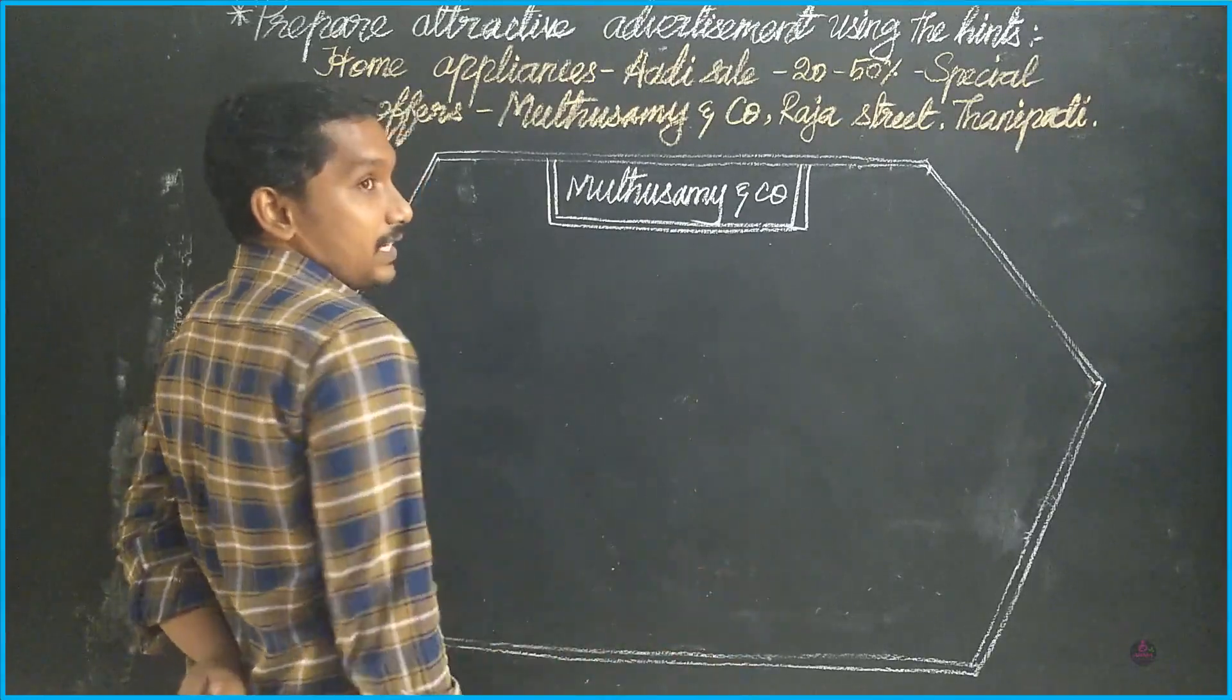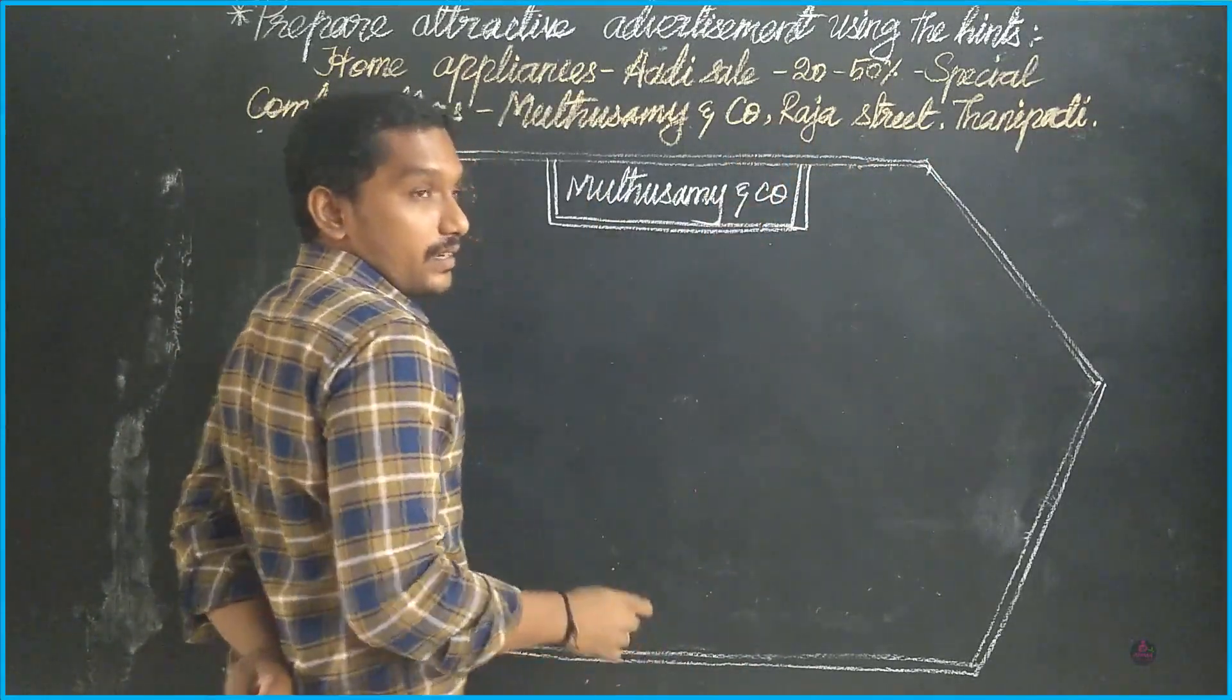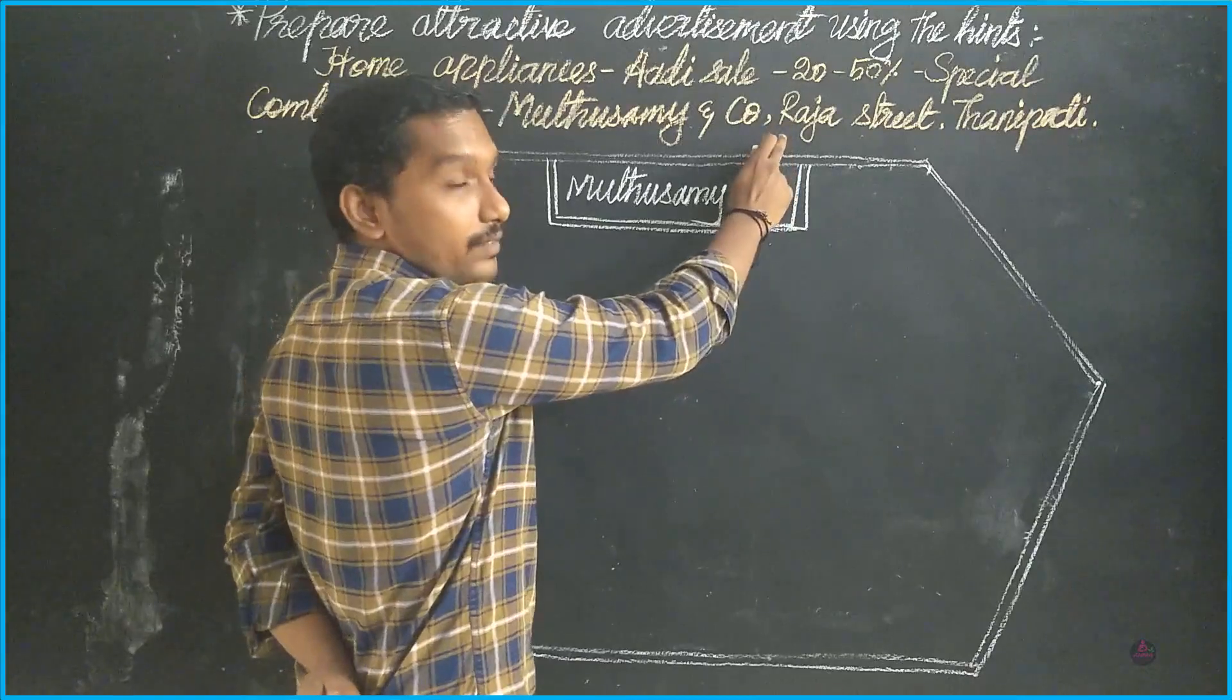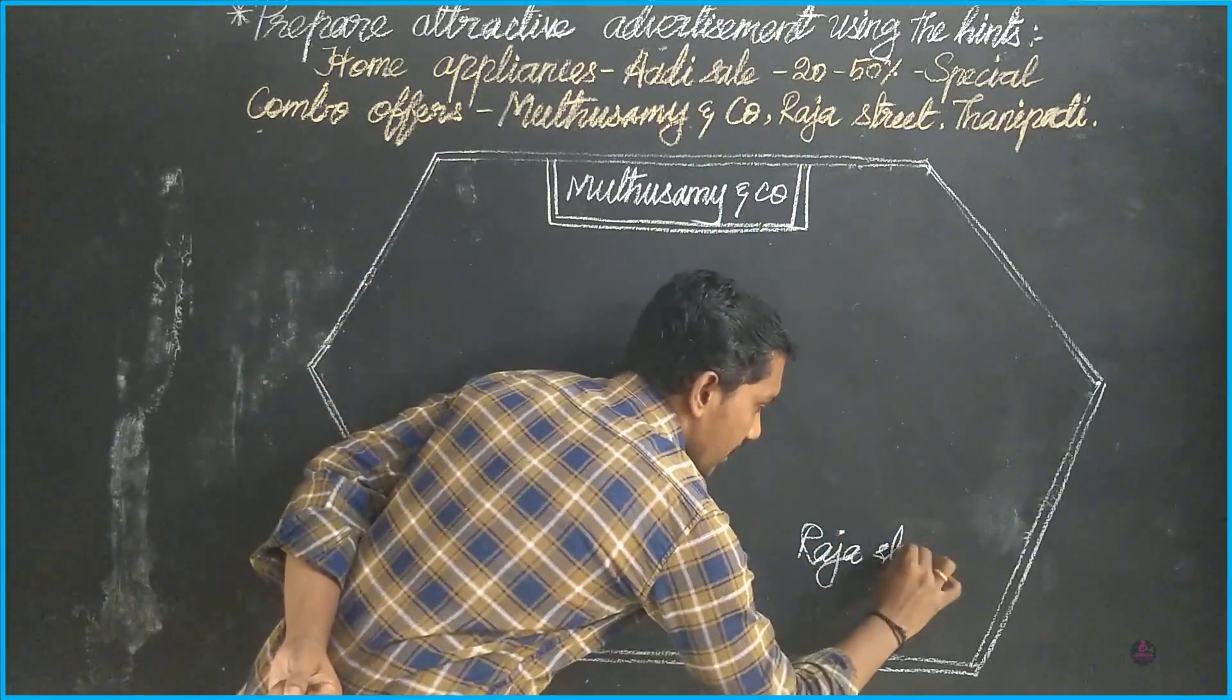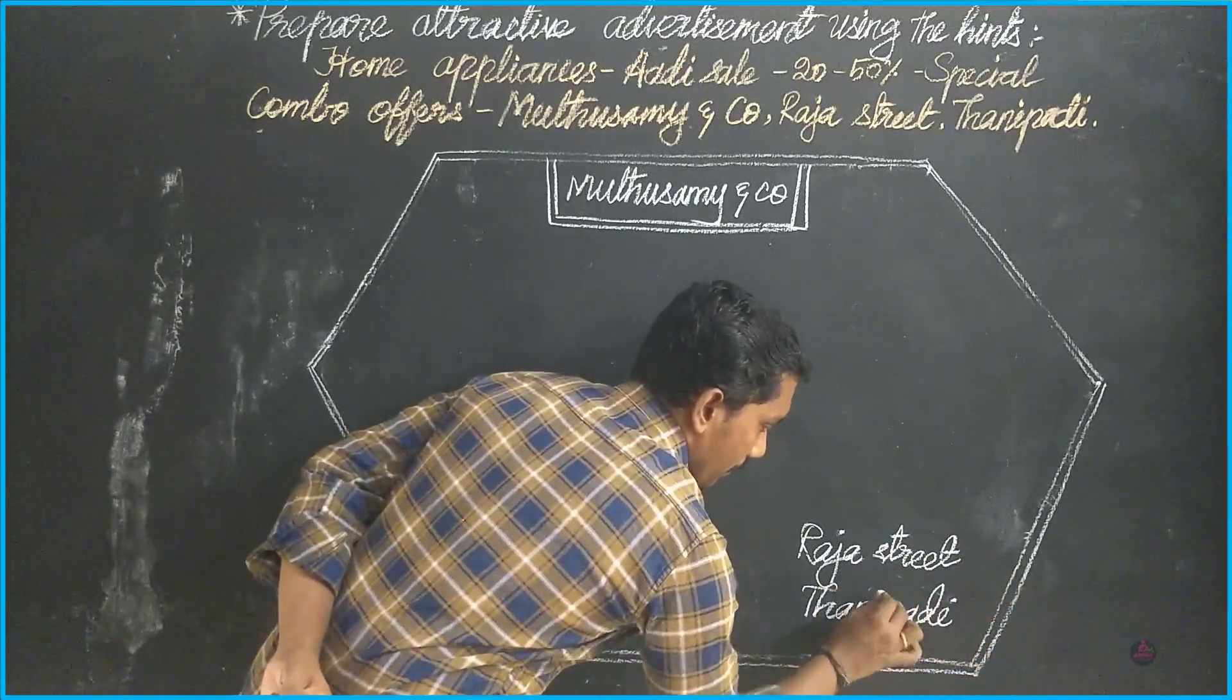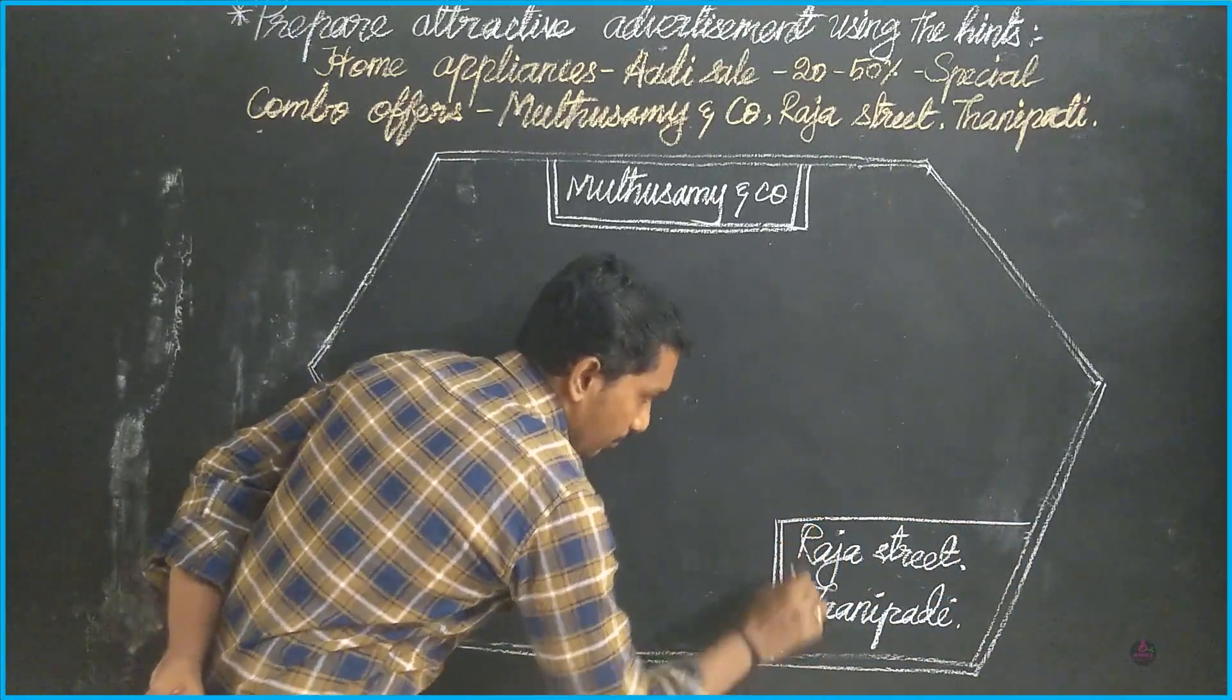Now I completed heading and now I'm going to write the address. The address is also in the question. See here, Raja Street, Thanipadi. Sir, I couldn't able to find the address in the question. Don't worry, you have to write your own address here. Even cell number, mail ID also you can write here. So here I have the address, so I just write it down: Raja Street, Thanipadi. Here I'll show you how to put this in your box. Make it double line.